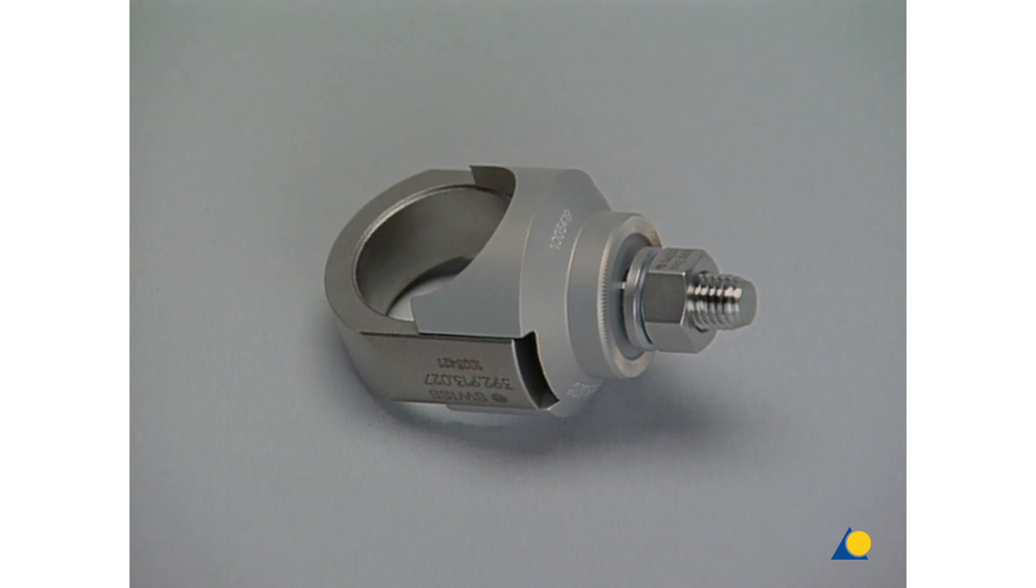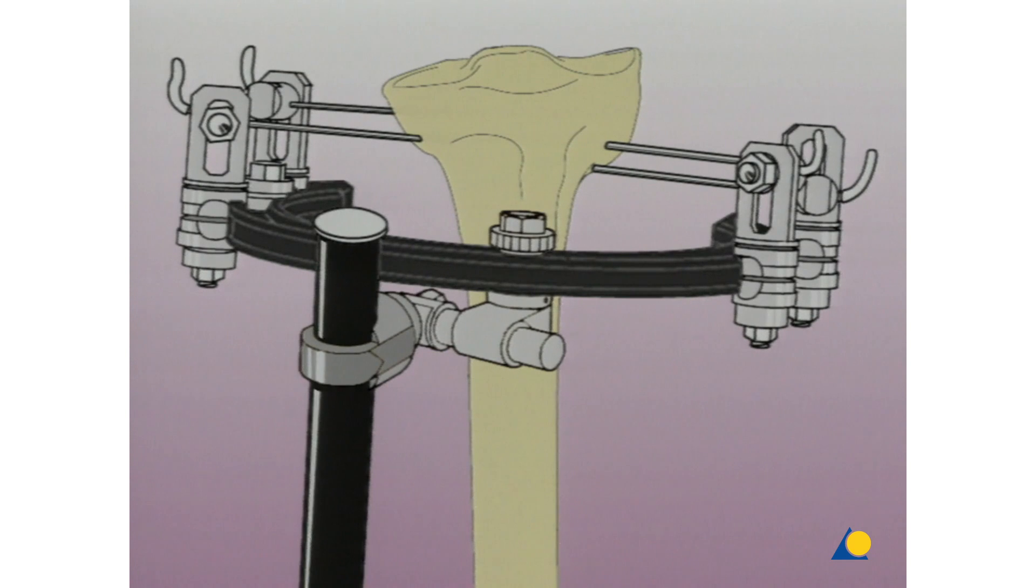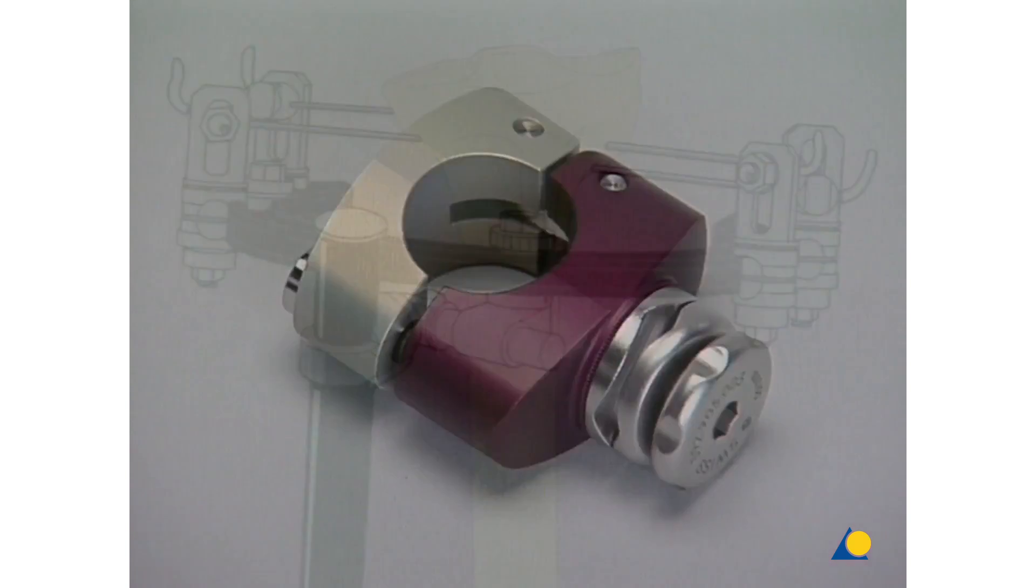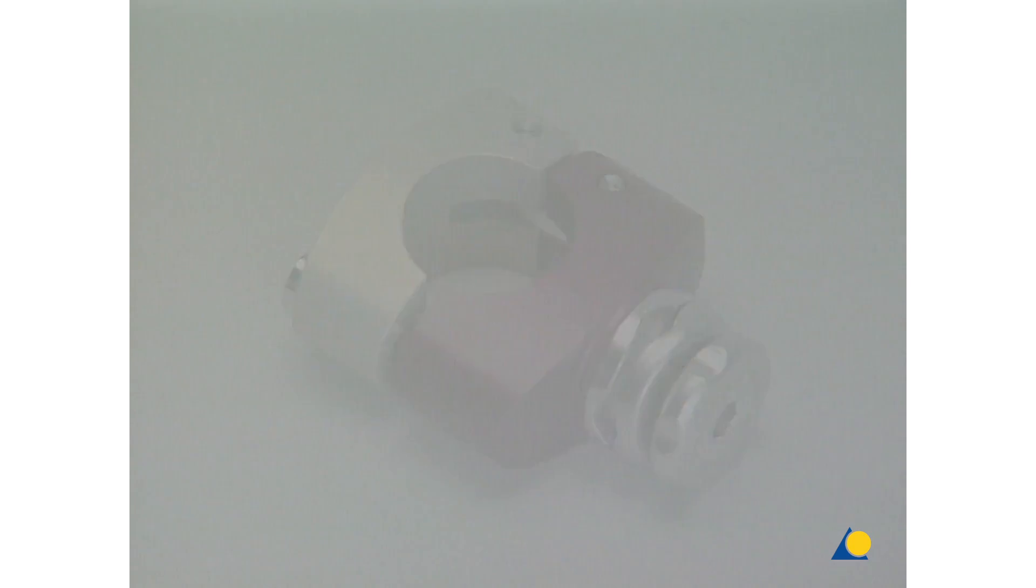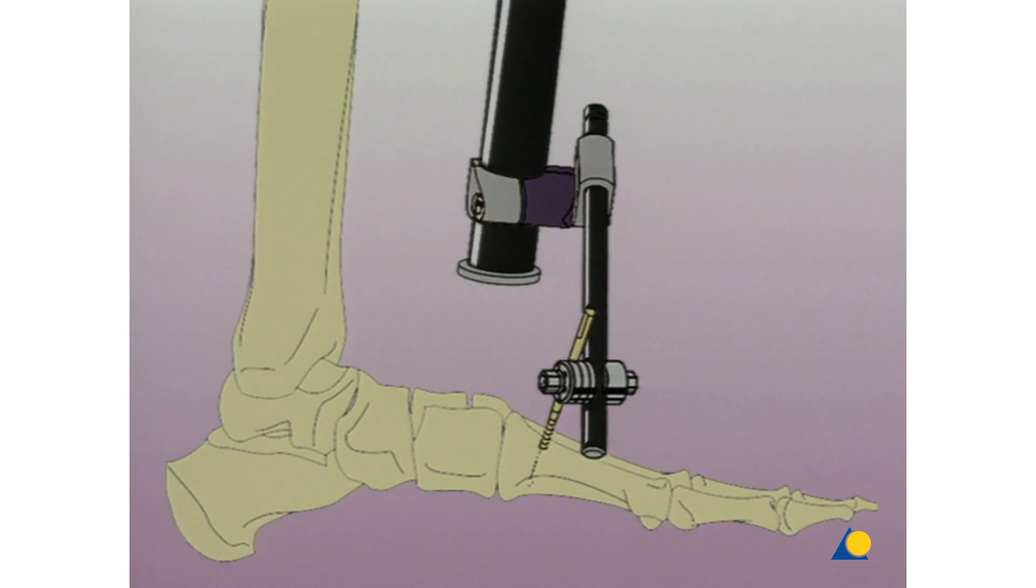This central body-to-ring clamp makes Mephisto compatible with the hybrid ring fixator. By using this slide-on single-pin clamp in combination with the central body-to-tube clamp, Mephisto can be used with the AO tubular fixator.